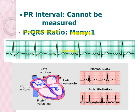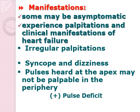Atrial fibrillation is considered to be disorganized. Manifestations: some patients may still be asymptomatic if atrial fibrillation has a mild to moderate ventricular response. However, once your atrial fibrillation has a severe ventricular response, your patient has a tendency to become symptomatic. They may experience palpitations and clinical manifestations of heart failure. The palpitations tend to be irregular, and the pulses heard at the apex may not be palpable at the periphery. There is an evident pulse deficit of even more than two beats per minute.